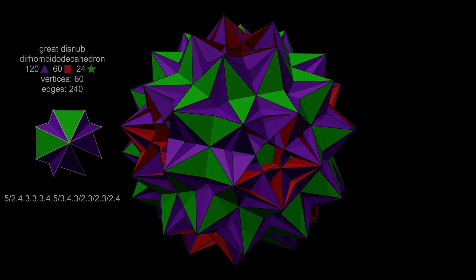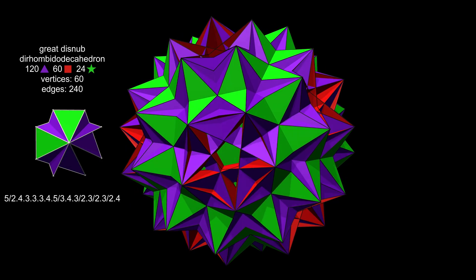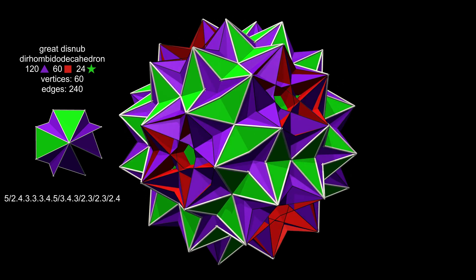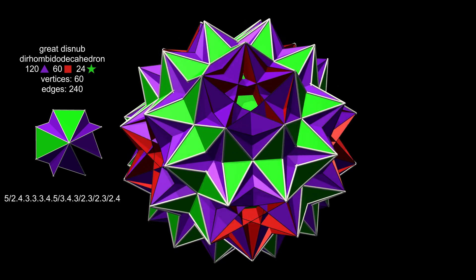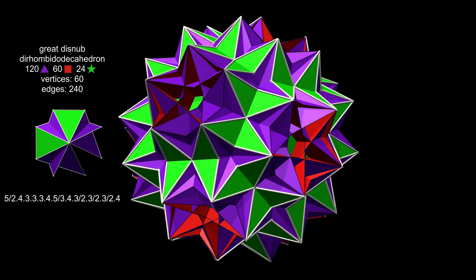Overall, 120 edges are double edges, highlighted in white. If you count these as two edges each, Skilling's figure has 360 edges.